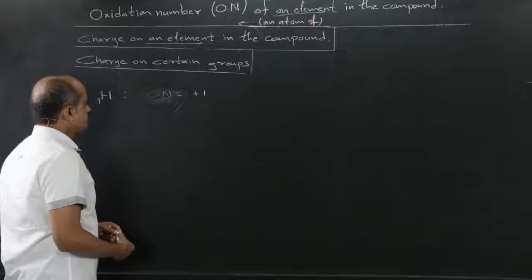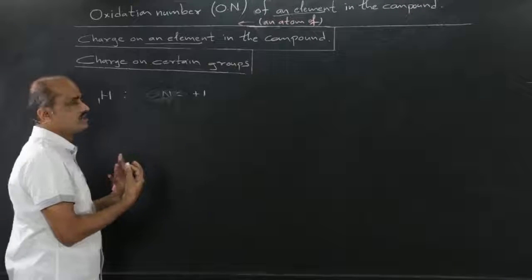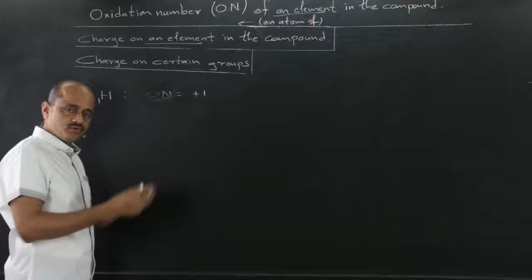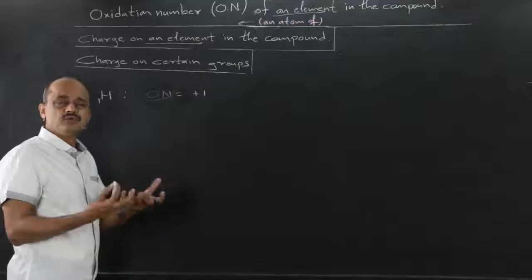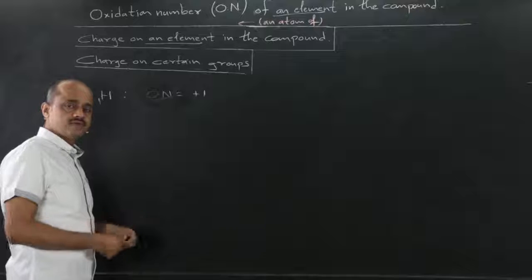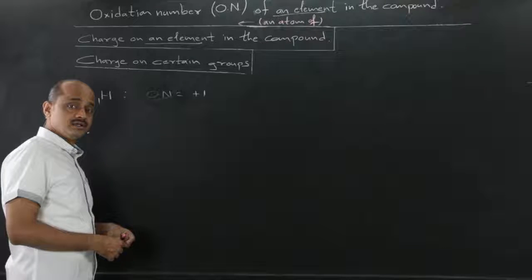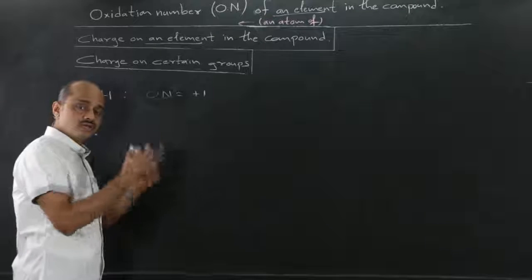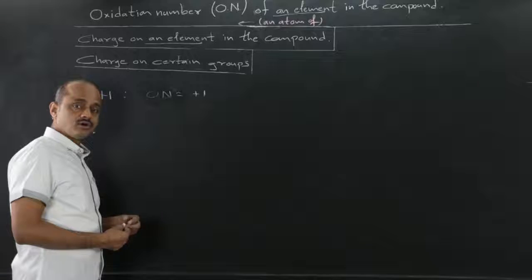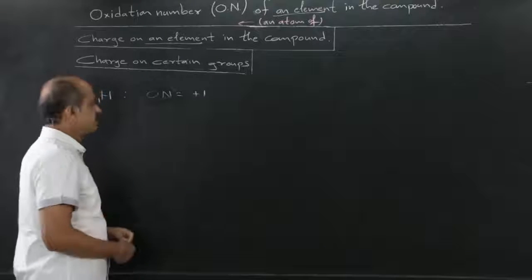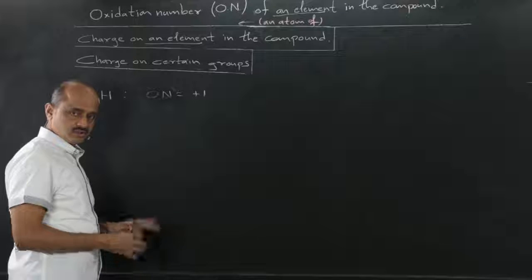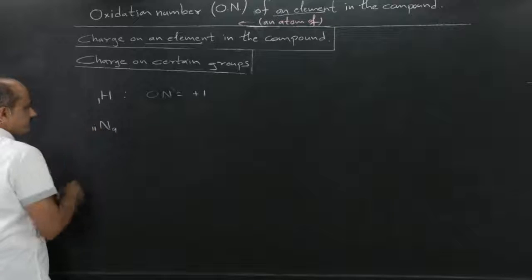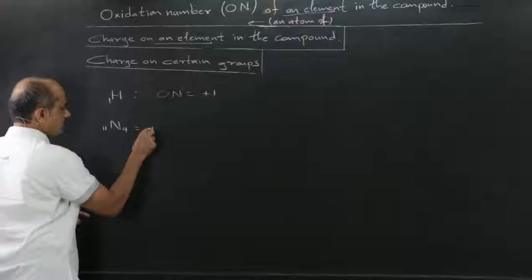If we know the oxidation number or the charge on certain elements in a compound, we can use that to mathematically calculate the oxidation number of many more atoms or groups. For example, sodium has atomic number 11 and an oxidation number of +1.